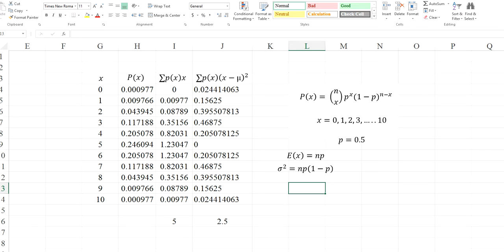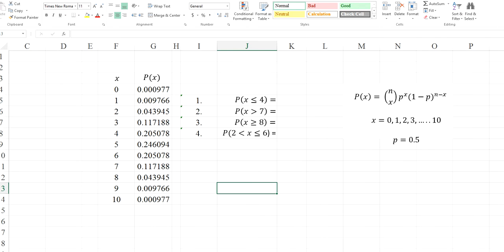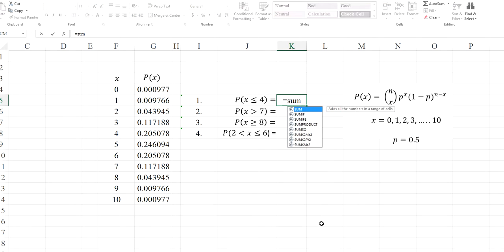Now, most of the questions related to binomial distribution are associated with probabilities. Calculating probabilities of various events. In this case, I considered 4 events. In this case, the event X is less than or equal to 4. Less than or equal to 4. 4, 3, 2, 1, 0 satisfy this event. So it is sum of 4, 3, 2, 1, 0. So this is the probability.